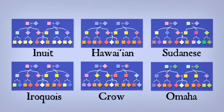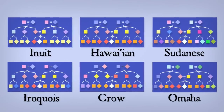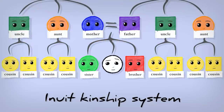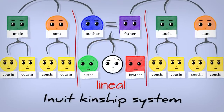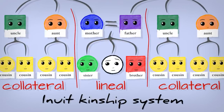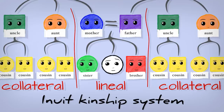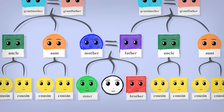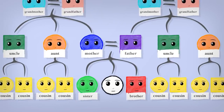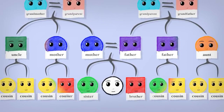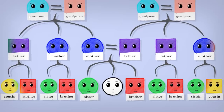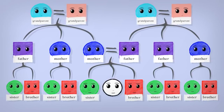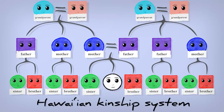Traditionally, the world's languages are grouped into six kinship systems. Languages in the Inuit system treat close family differently from family to the side of them — their collateral kin. Now imagine if we dropped this lineal-collateral distinction: the terms for aunt and uncle would become indistinguishable from the word for parent, and siblings and cousins would use the same terms for each other. Which is exactly what happens in Hawaiian kinship.